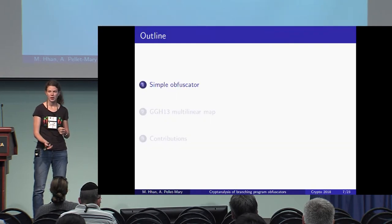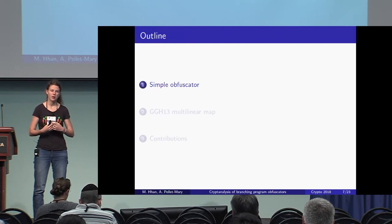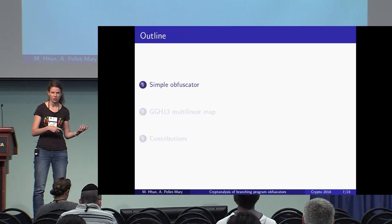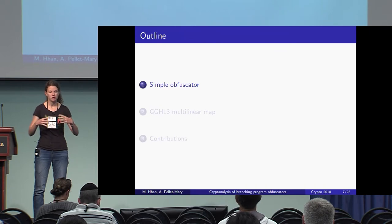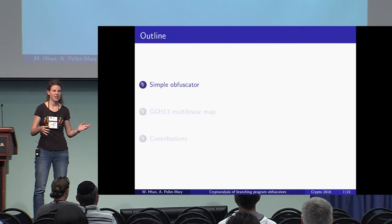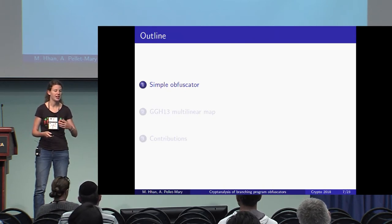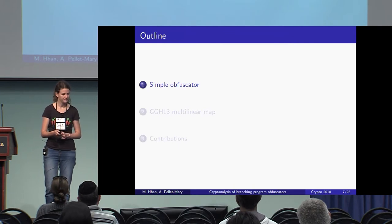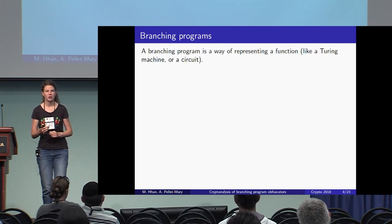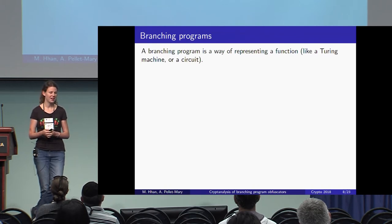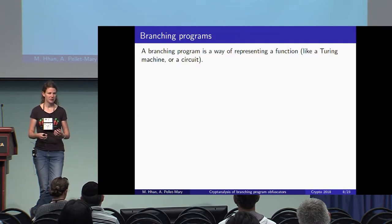In order to describe the two attacks, let me first give a simplified explanation of how the obfuscators work. We focus on branching program obfuscators, which are very similar in structure. I'm going to define a simple obfuscator that captures the more recent branching program obfuscators, and then describe how the attack works on this simple obfuscator.